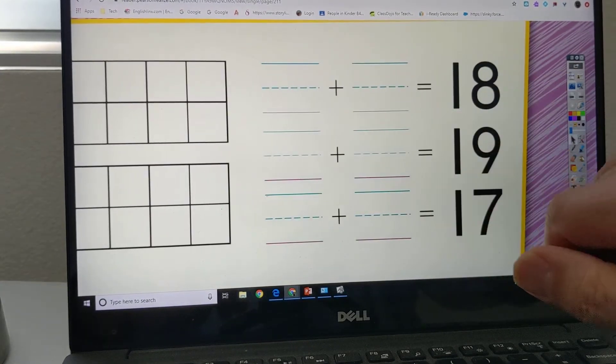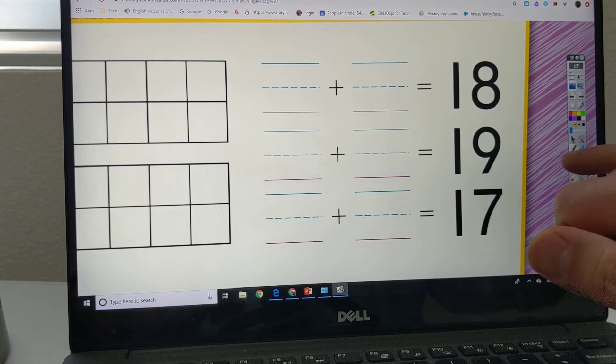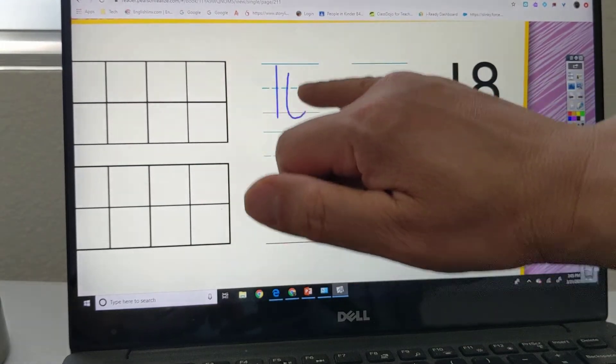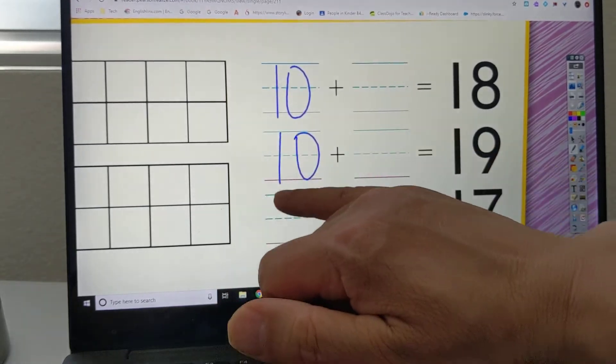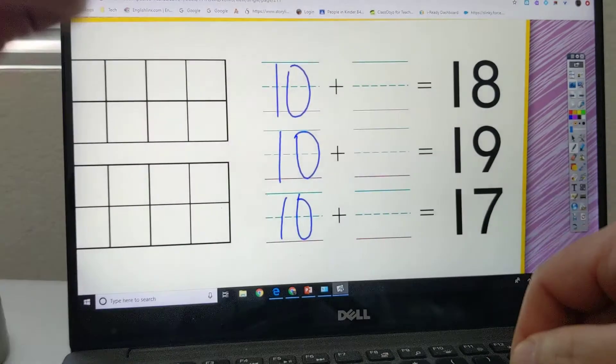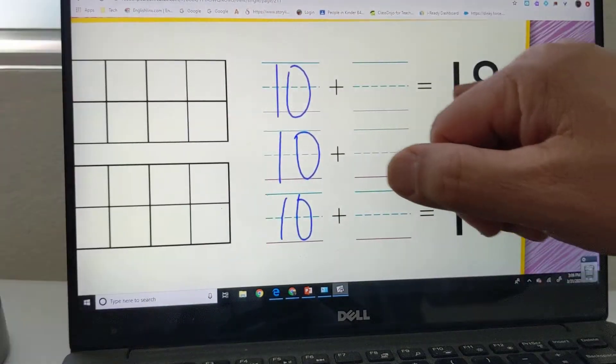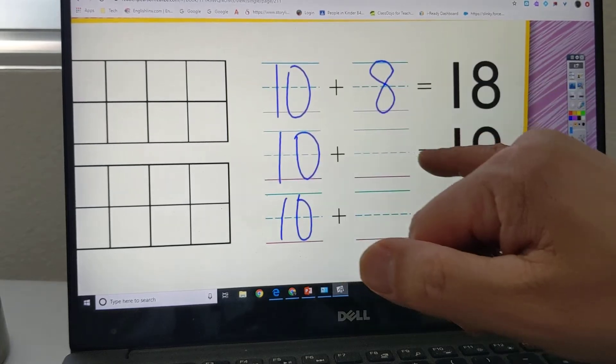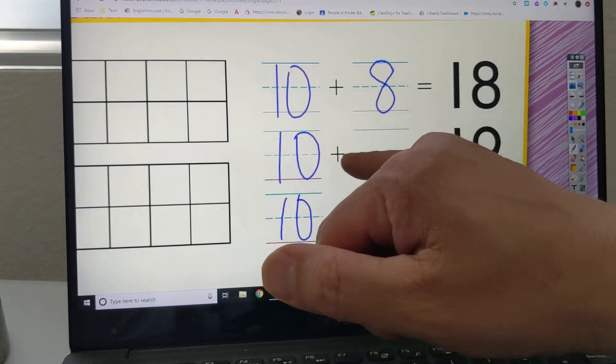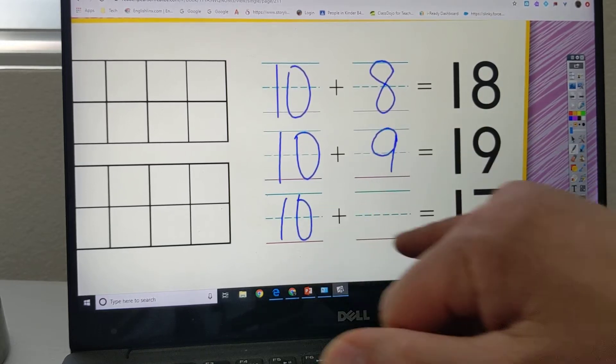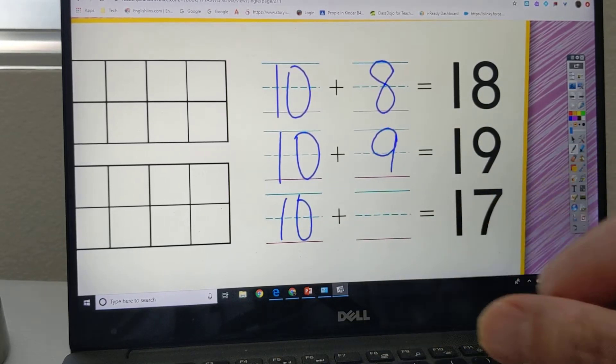Okay, so in this one, 18. This side is always 10 because there's a 10 on the container. Start with 10. And then how much you add to make 18? How many ones, how many rocks? 8. How many more rocks from 10 to 19 rocks? 9. Figure this one on your own. 10 plus how many to make 17?